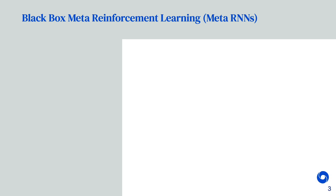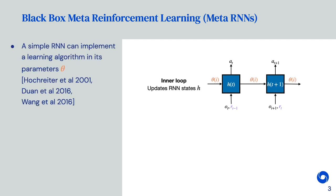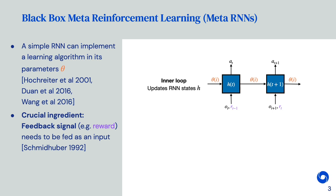In contrast, one of the most simple meta-learners to date are meta-recurrent neural networks. They learn purely in their activations without relying on backpropagation and gradient descent. A simple RNN can implement a learning algorithm in its parameters. The crucial ingredient is to add a feedback signal, such as the reward in RL, to the RNN inputs. This allows for learning to happen based on that feedback signal in the activations.